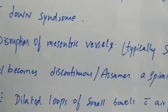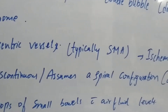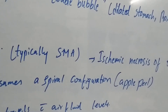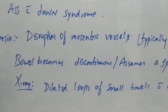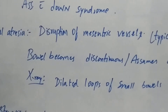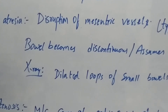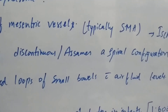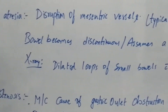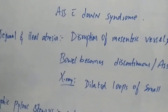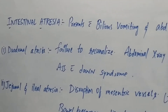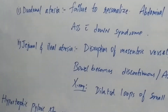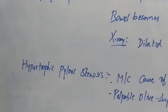The bowel becomes discontinuous or assumes a spiral configuration — that is the apple peel appearance. On X-ray it shows dilated loops of small bowel with air-fluid levels.